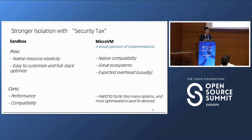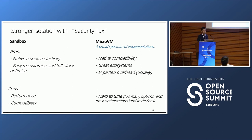But the disadvantages are obvious: one is performance, and the other is compatibility. Everything trying to emulate Linux is not Linux. gVisor emulates about 270 syscalls with limited parameters, while Linux has a total of 350 syscalls. So the compatibility issue cannot be totally solved in this direction.